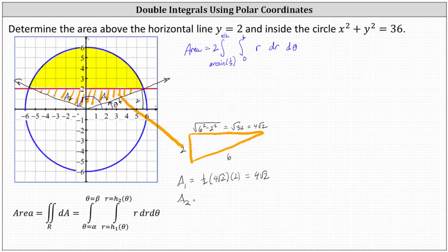Well, the area of the right triangle in quadrant two is also four square root two, which means to find the yellow area, we need to subtract eight square root two from the double integral.